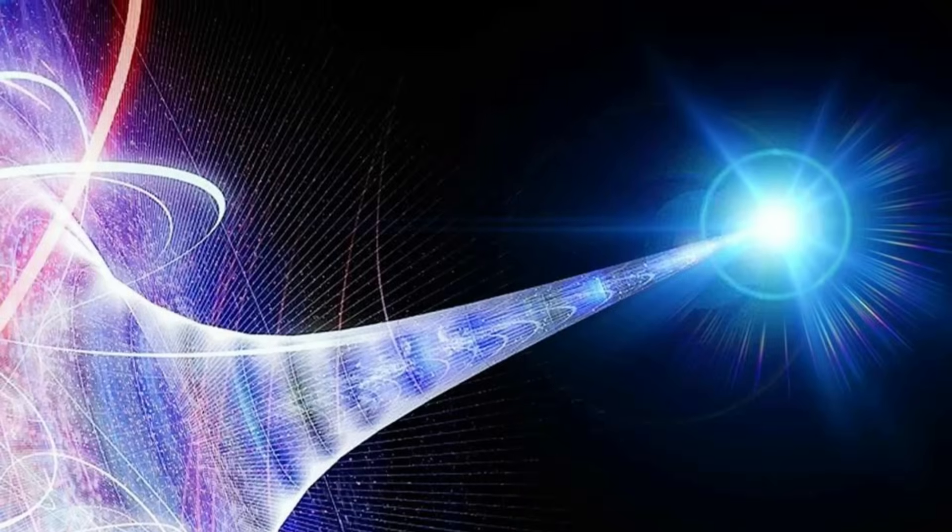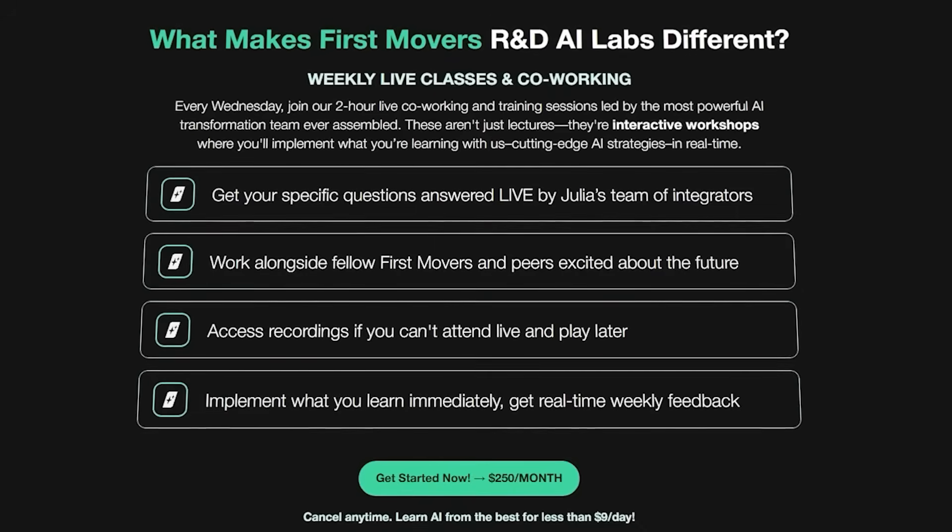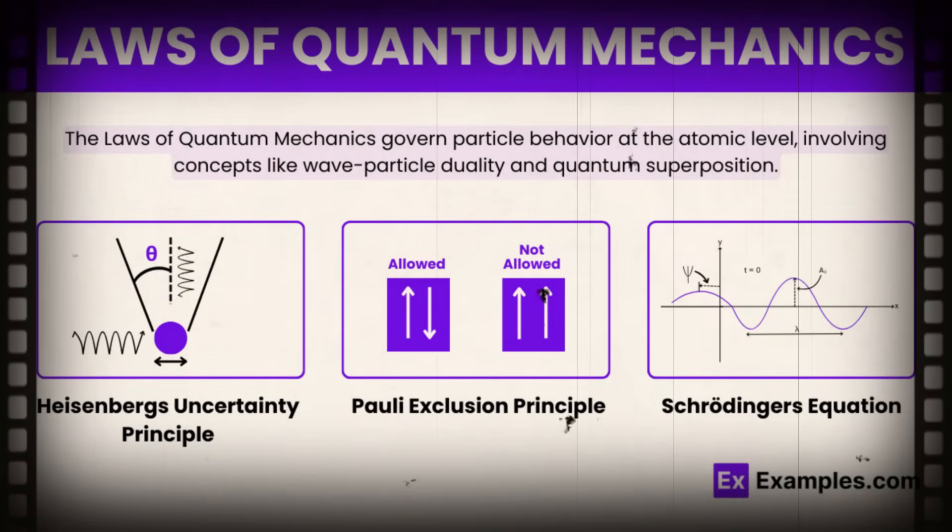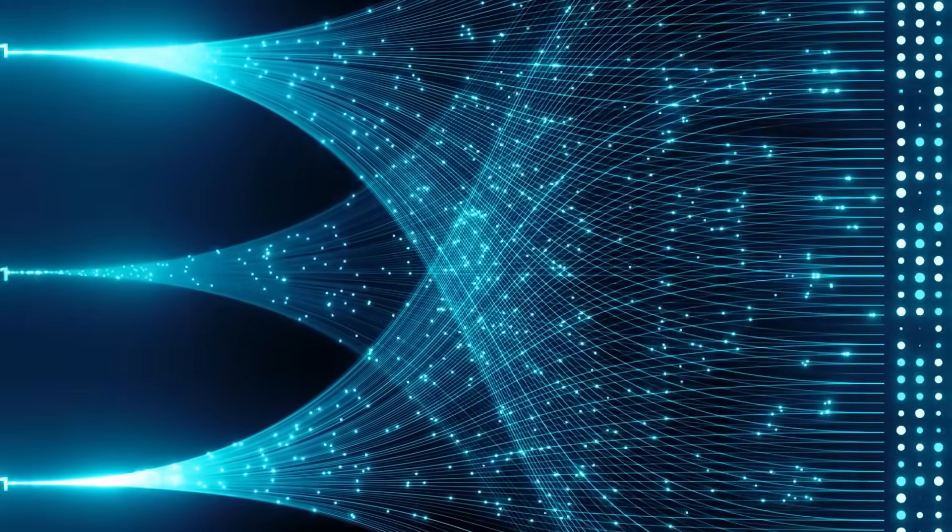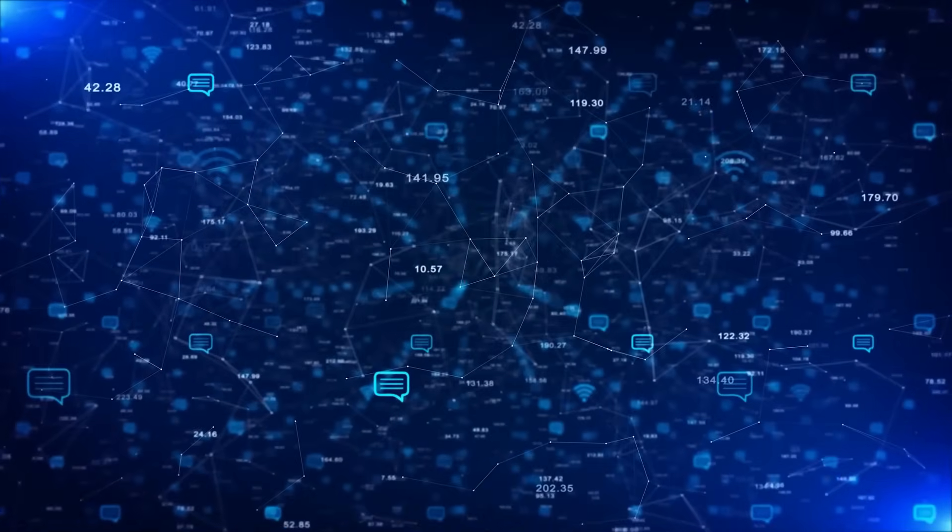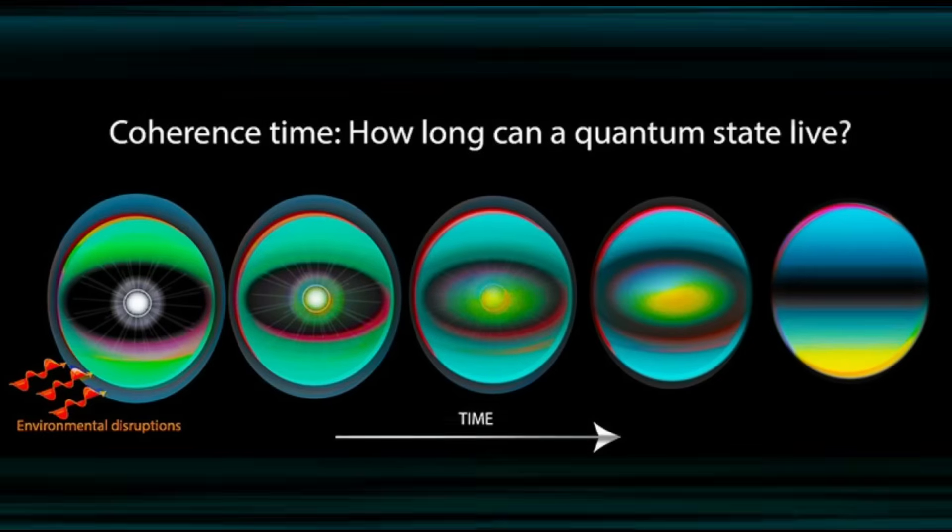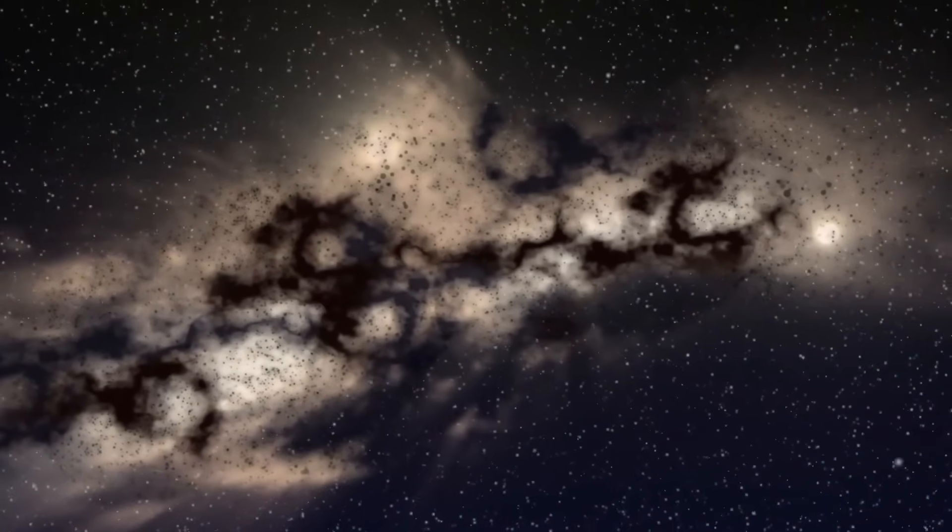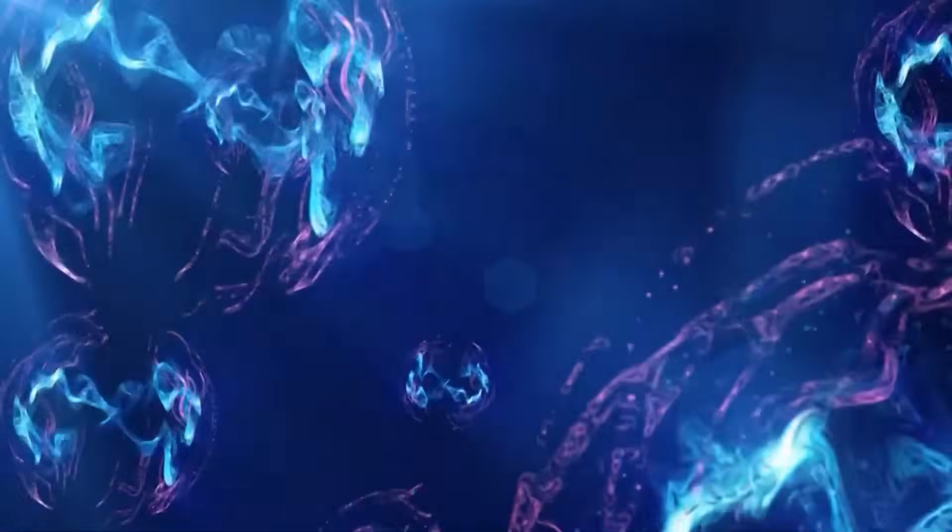The Quantum Censorship Hypothesis. Grok continued with a scenario most people have never heard of. It proposed that the laws of quantum mechanics themselves may actively erase detectable signs of advanced civilizations. The more complex and information-rich a system becomes, the more likely it is to trigger quantum decoherence. Over time, the universe may censor signals that exceed a complexity threshold, like a firewall against visibility.